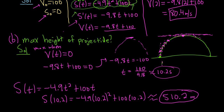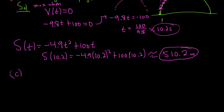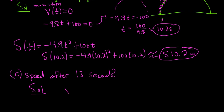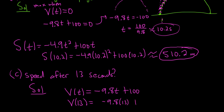Part C: find the speed after 13 seconds. To find speed, we take the absolute value of velocity. Our velocity function is negative 9.8t plus 100. We plug in 13: V(13) = negative 9.8 times 13 plus 100, which equals negative 27.4 meters per second.